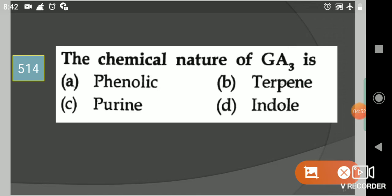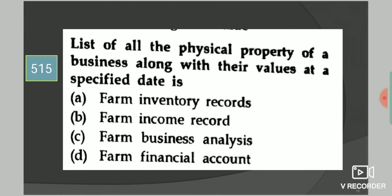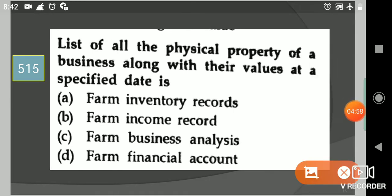Next question: List of all the physical property of a business along with their values at a specified date is? Your options are farm inventory records, farm income record, farm business analysis, farm financial account. Your answer is option A, farm inventory records.